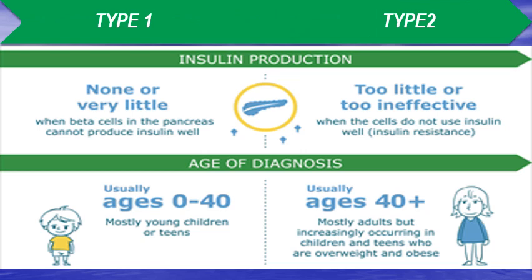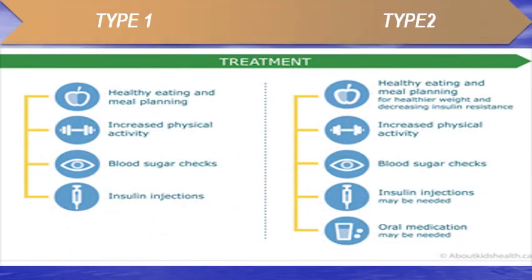Type 1 diabetes predominantly affects young children and adolescents below 40 years of age, while type 2 occurs mostly in adults above 40. Treatment includes healthy eating and meal planning; for type 2, weight control decreases insulin resistance. Increased physical activity, regular blood sugar checks, and insulin injections are mandatory for type 1 diabetics, while oral hypoglycemics are often sufficient for type 2 — though insulin injections may be needed if oral agents fail.